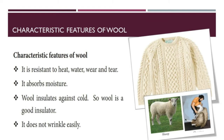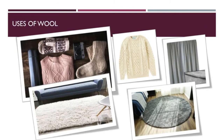Characteristic features of wool: it is resistant to heat, water, wear, and tear. It absorbs moisture. Wool insulates against cold, so wool is a good insulator. It does not wrinkle easily. Uses of wool: wool is a multifunctional fiber with a range of diameters that makes it suitable for clothing, upholstery fabrics, and technical textiles. Two-thirds of wool is used in the manufacture of garments including sweaters, dresses, coats, and active sportswear. Blended with other natural or synthetic fibers, wool is used in drape and grease-resistant blankets, anti-static and noise-absorbing carpets.